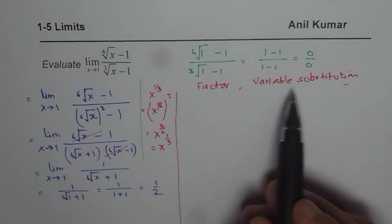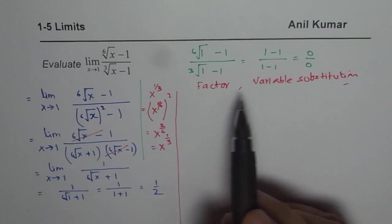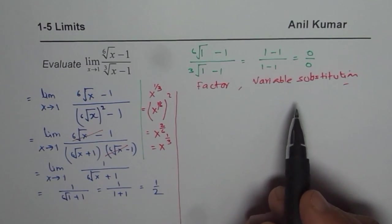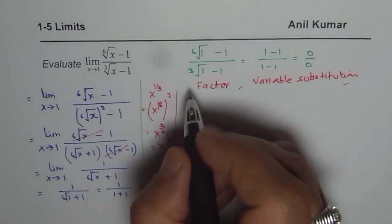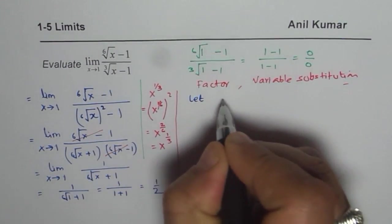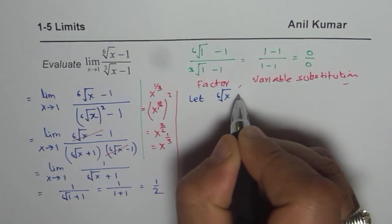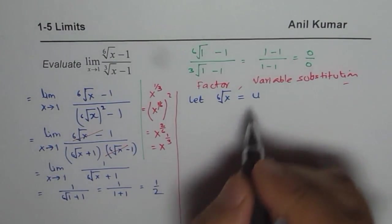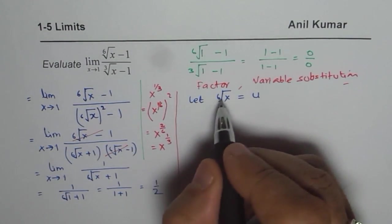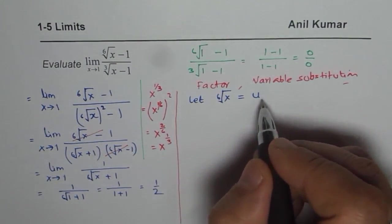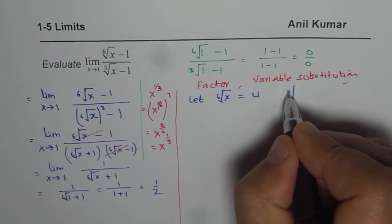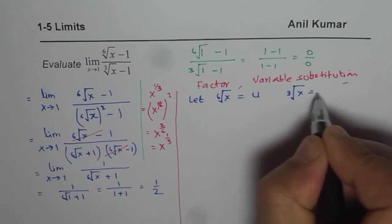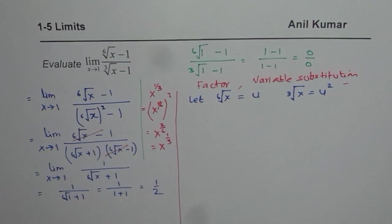The other method is variable substitution. In variable substitution, what we will do is we'll say let 6th root of x be equal to a variable u, correct? In that case, if I square both sides, what do I get? I get cube root of x as equals to u square. You get the point, correct?